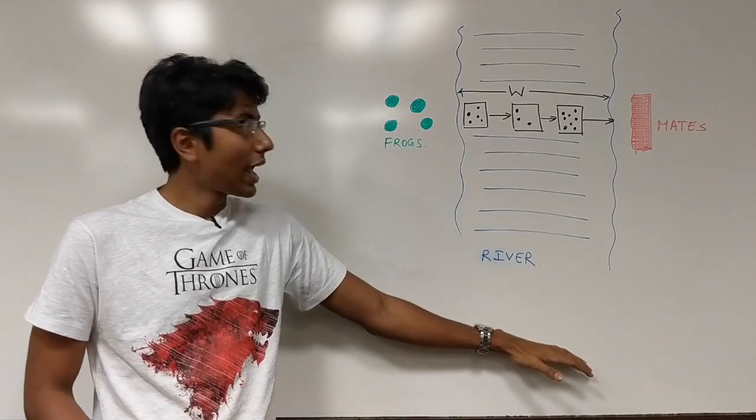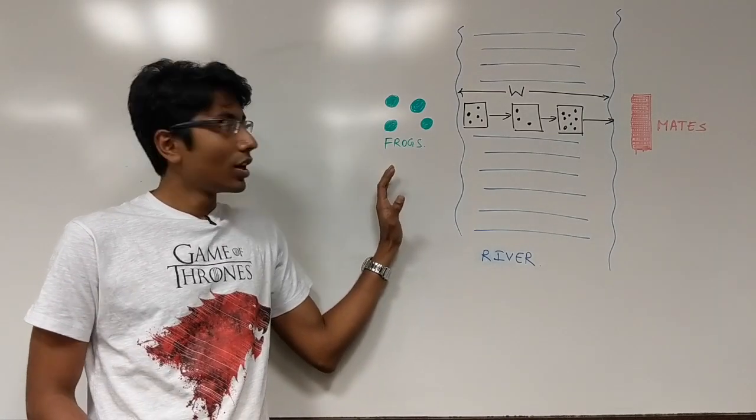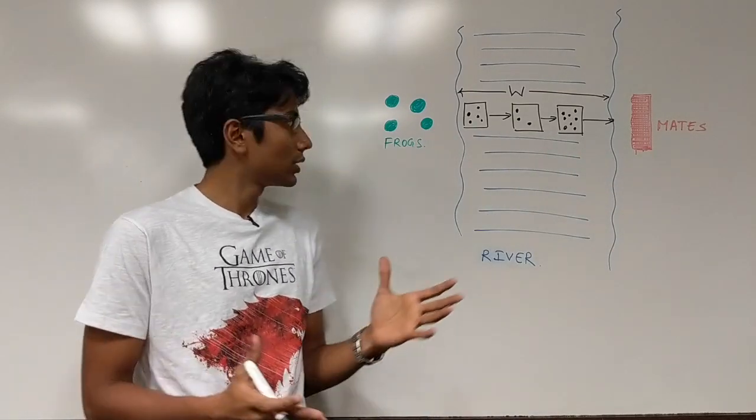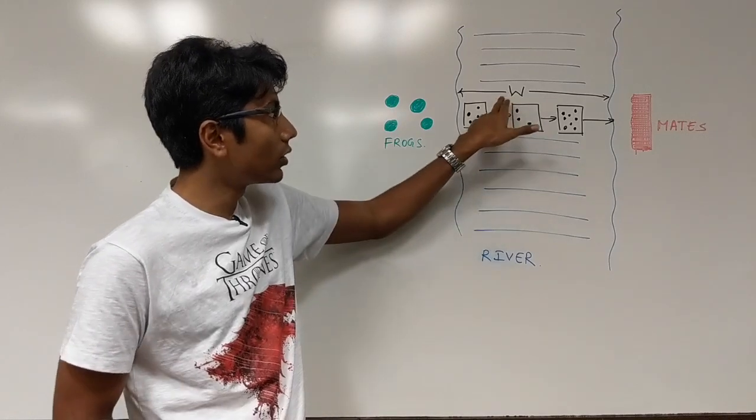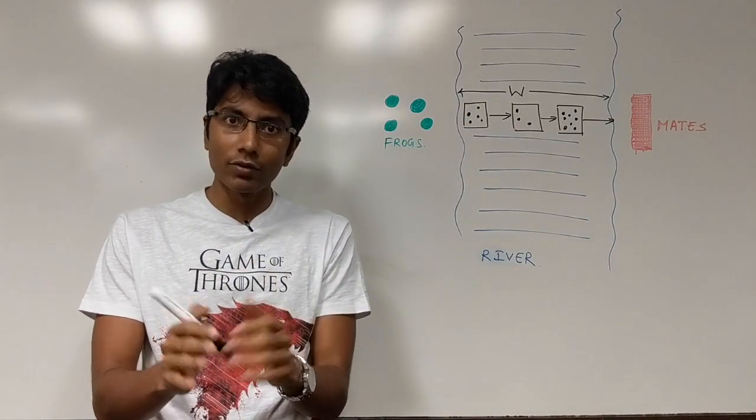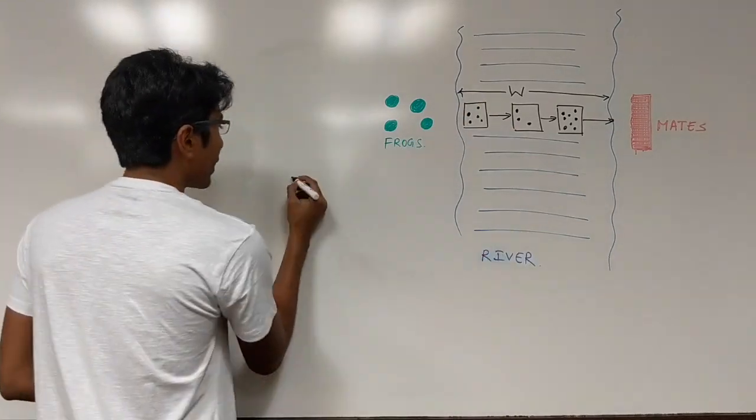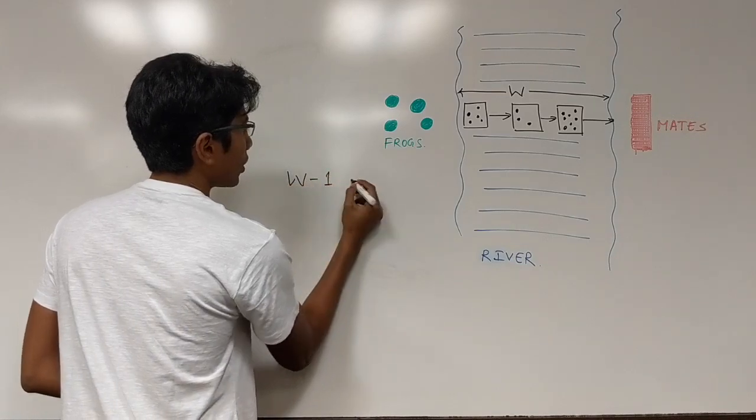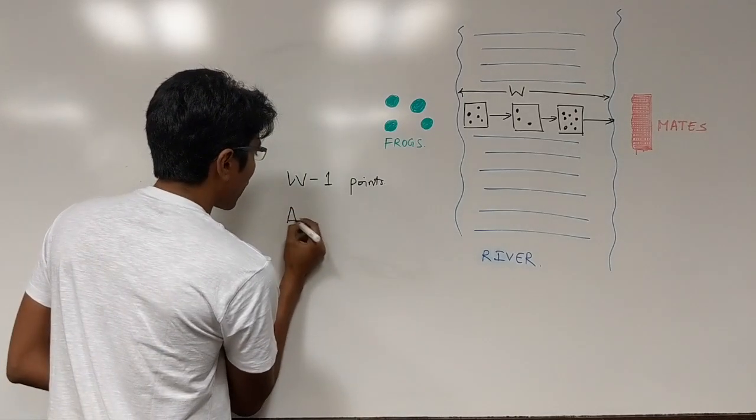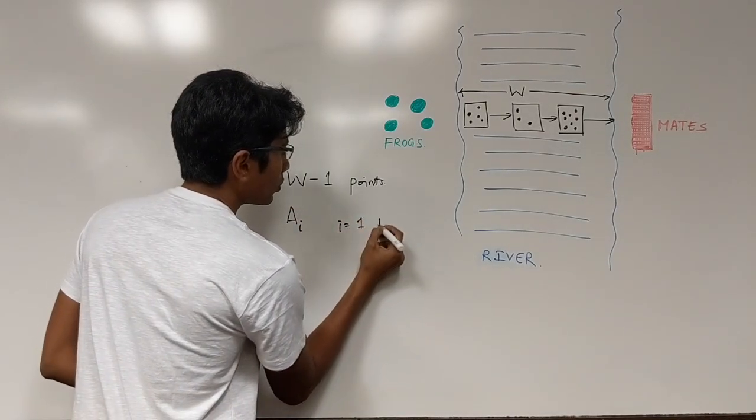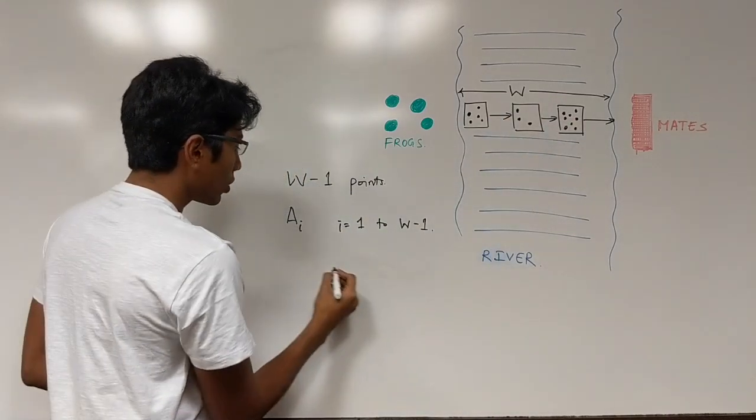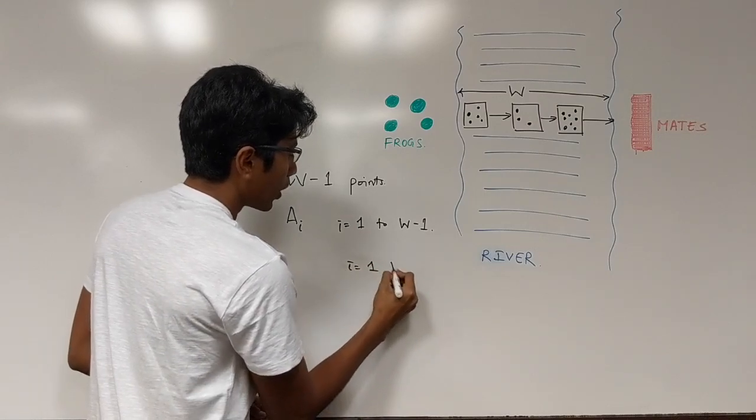The problem is that you have a river and you have frogs on one side and they have mates on the other side. So all the frogs want to get to the mates. But there's a problem that the river is of width W, and on each point in this river, because the width is W, that's W-1 points on the river. And on each point it contains A_i stones where i goes from 1 to W-1. So in our sample case, W is equal to 4, which means i goes from 1 to 3.